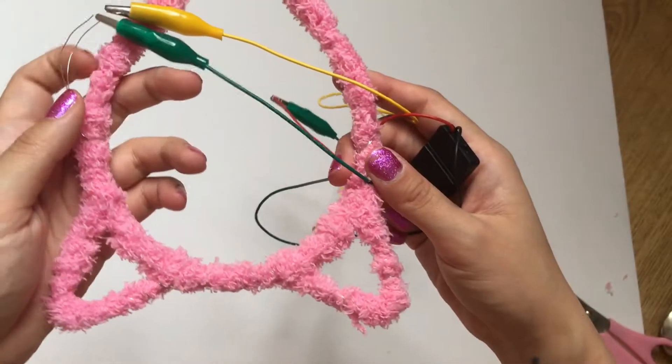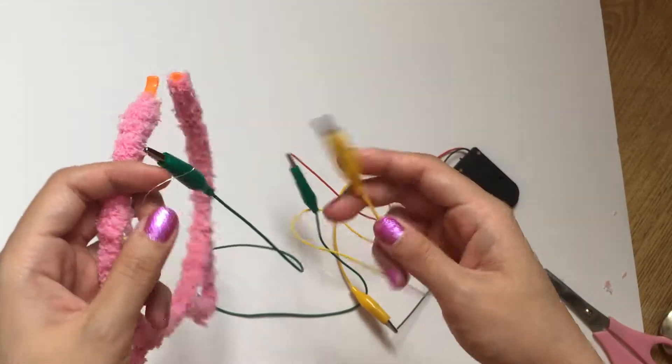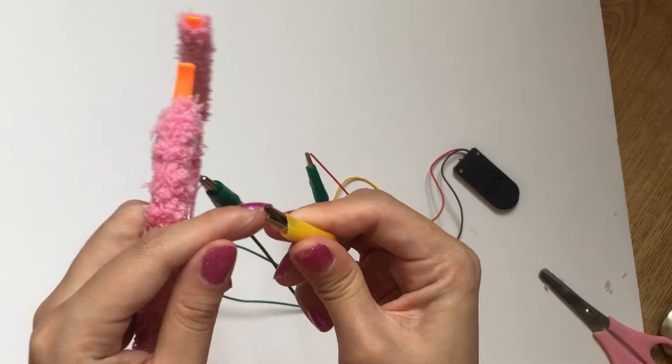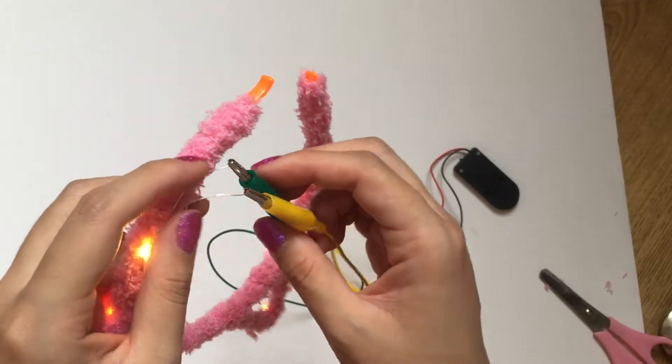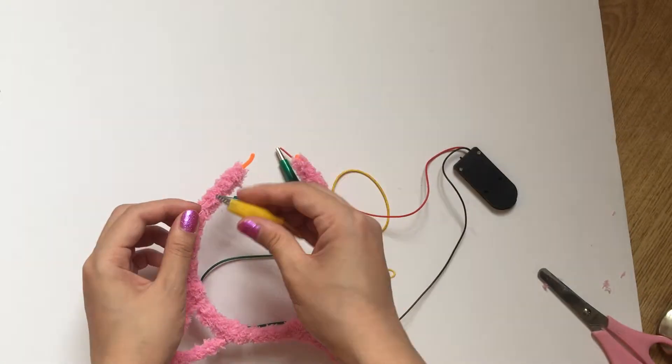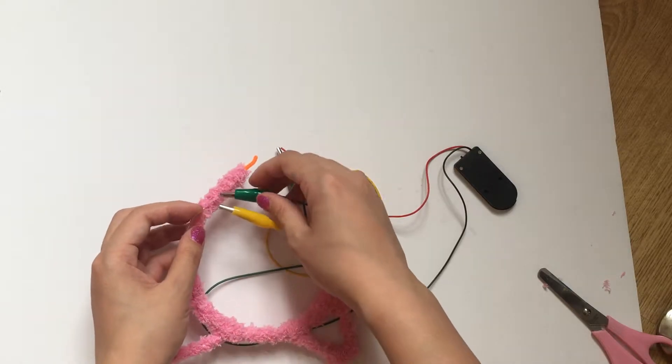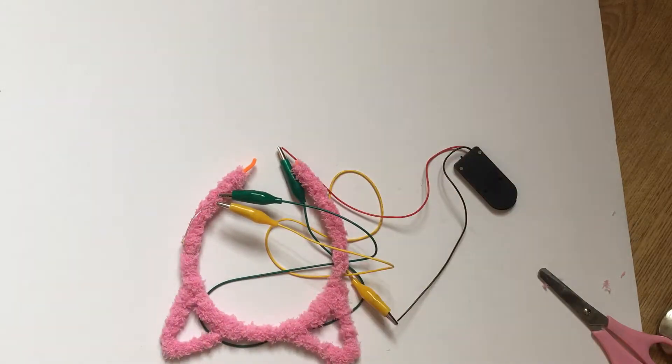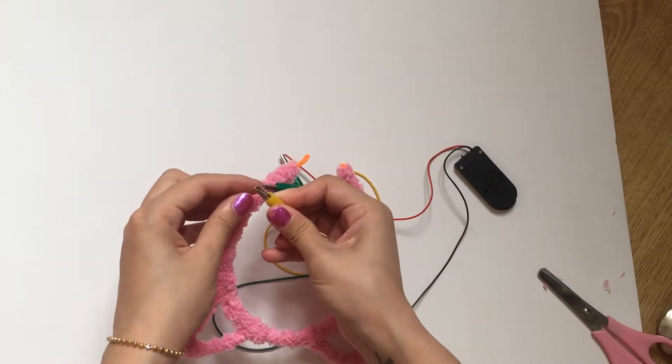As you can see, oops. So as we're using alligator clips, it is important to note that the connections can be a little bit loose, and the reason for this is because it's just simply clipping. Once you have soldered the LEDs in place, they will be a lot more secure.